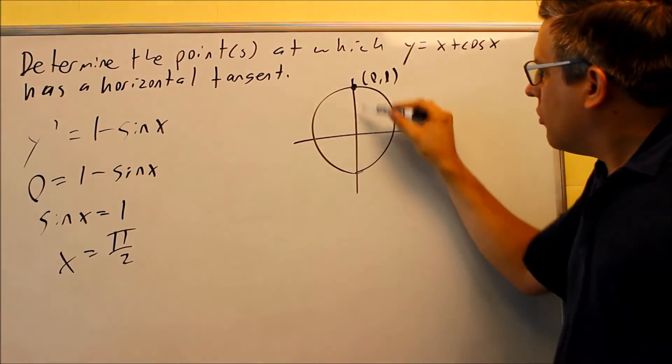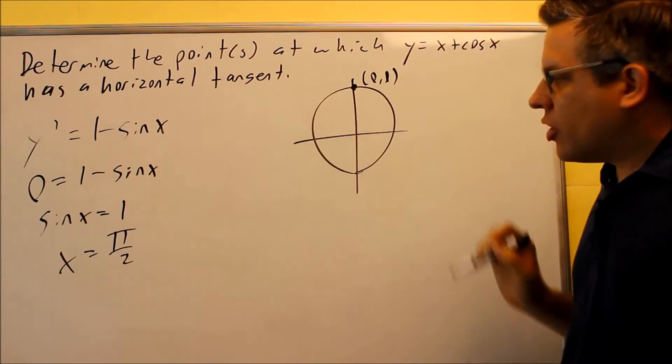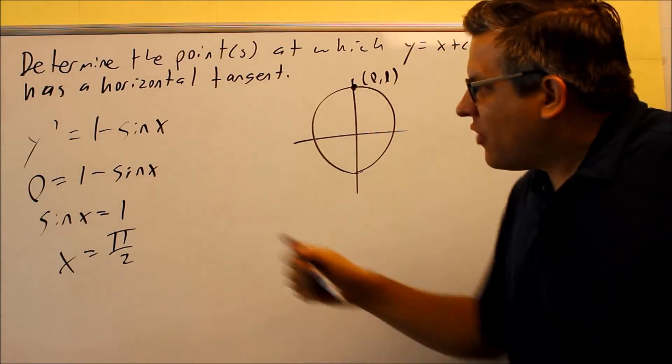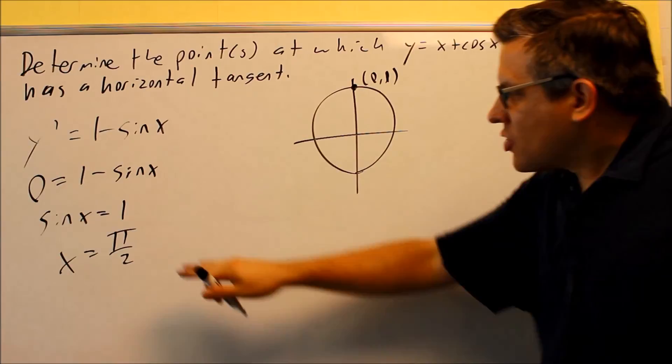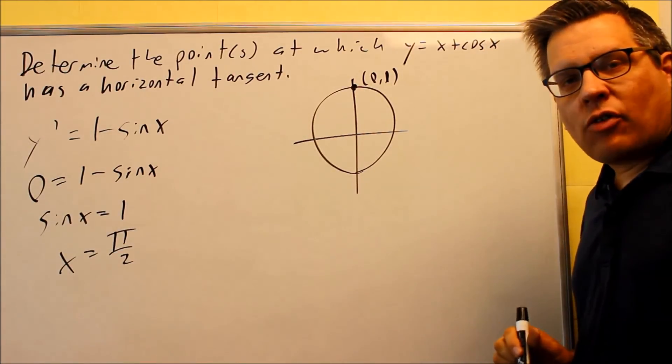At x = π/2, the y-value is one. That's the x-value at which the derivative equals zero, so that's the only point where you have a horizontal tangent.